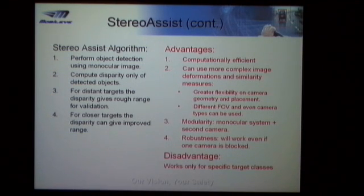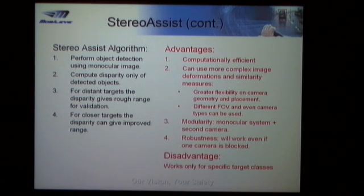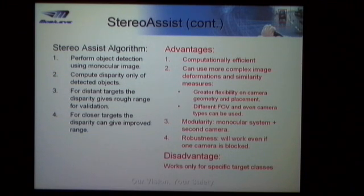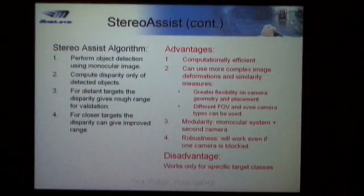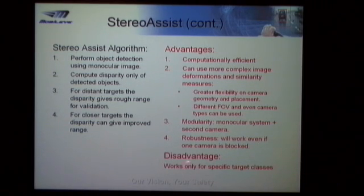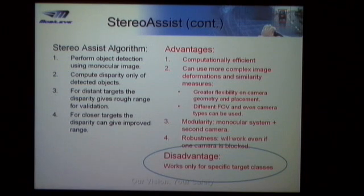Typically we have up to about 10 targets of interest. It's a modular system: a car manufacturer might have a single camera in one model, then add a second camera in any convenient location to add extra functionality beyond, for example, the NHTSA FCW LDW which is already covered. It's also robust because even if one camera is blocked, we still have a functioning system at the monocular level. The disadvantage — and this is quite significant — is that it works only for specific classes: vehicles, bikes, pedestrians, lampposts, traffic signs. They have to be well defined.